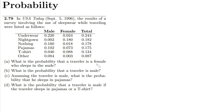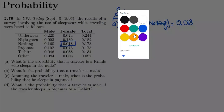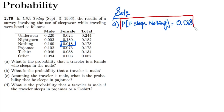Part a asks: what is the probability that a traveler is a female who sleeps in the nude? In the table, the female column intersects with the 'nothing' row, which represents sleeping nude. That intersection entry gives us the probability of 0.018, and that is the solution to part a.